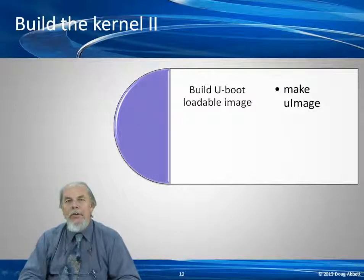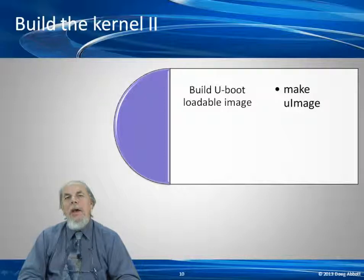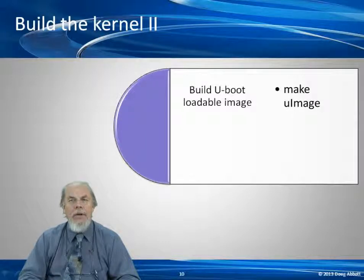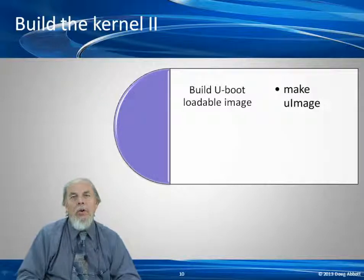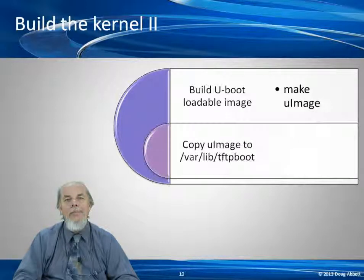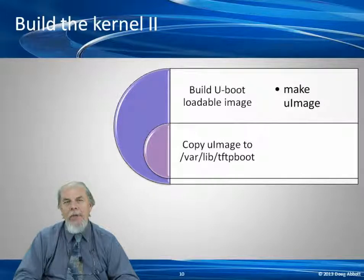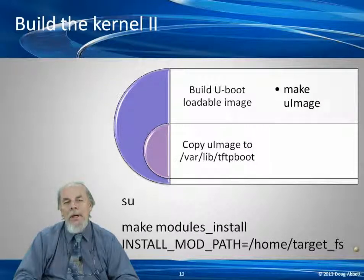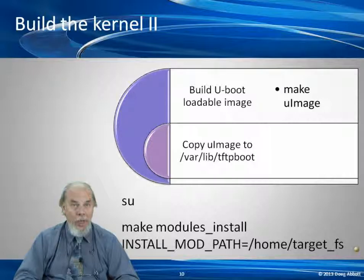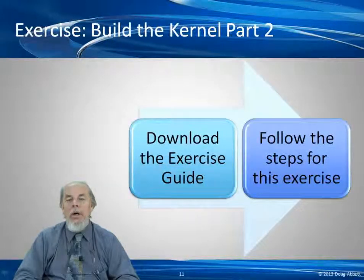The second stage of building the kernel involves two steps. It turns out that u-boot requires a header in front of every file that it deals with. There is a make target in the kernel's makefile called uImage that will attach that header to the kernel executable image. Then we copy that uImage to /var/lib/tftp/boot. Then become root user and execute: make modules_install INSTALL_MOD_PATH=/home/target/fs — and realize that is all one line.